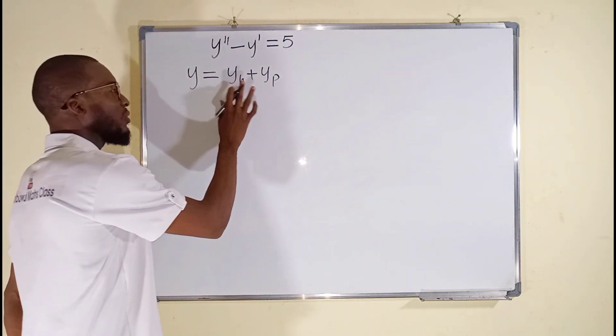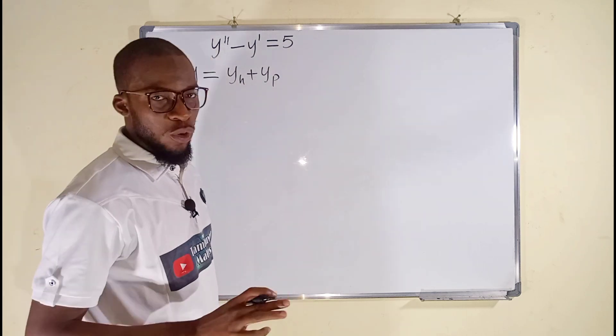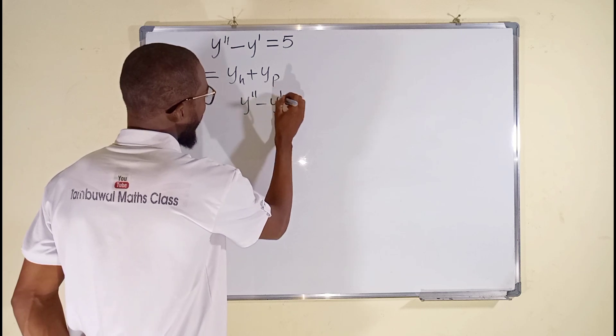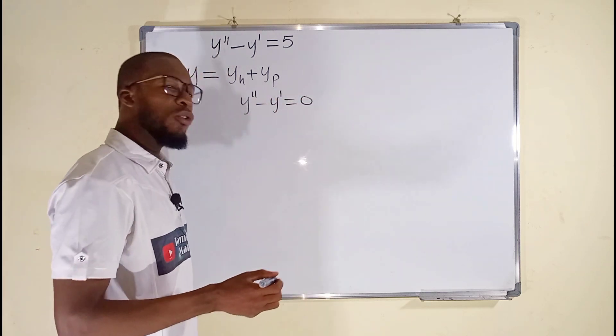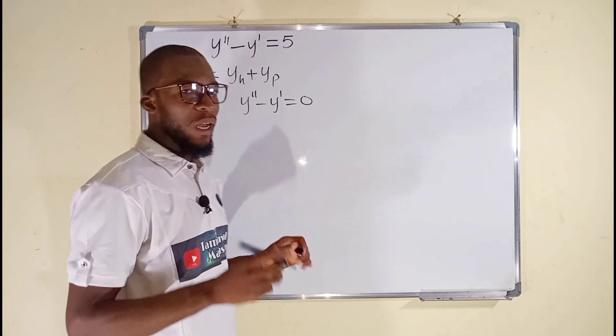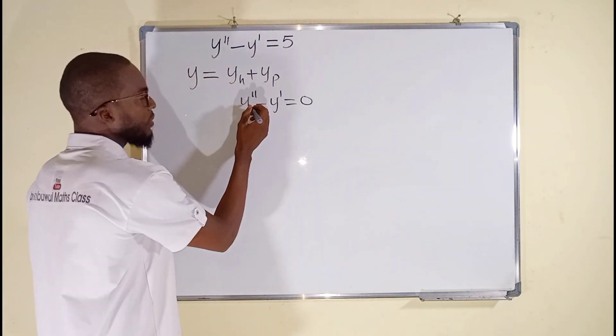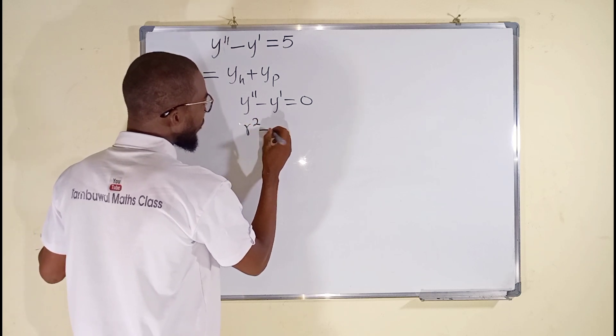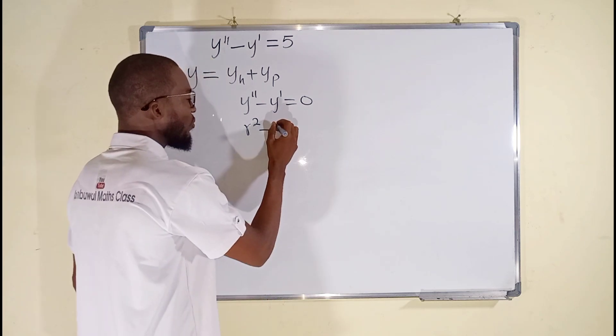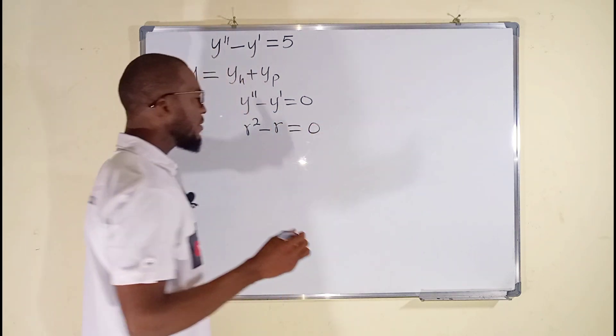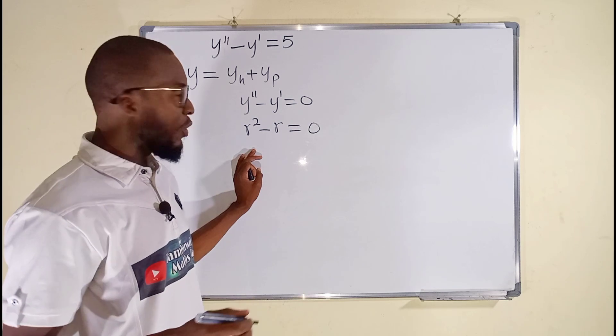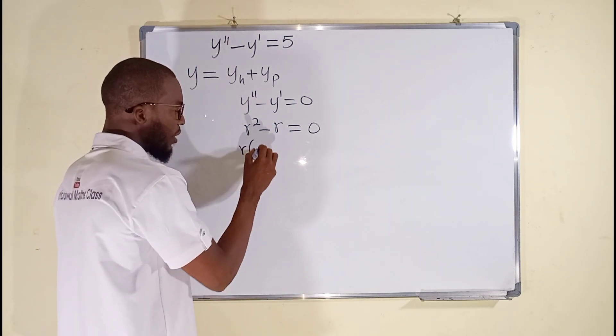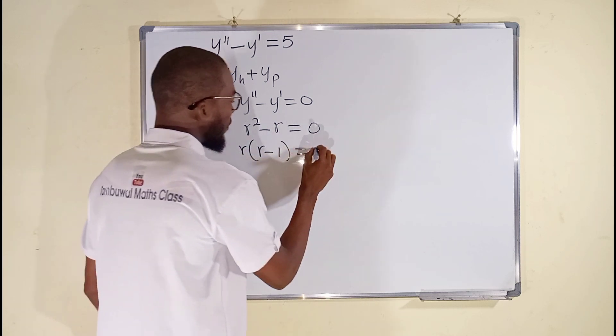Now let us find y sub h first by setting 5 to be equal to 0. We have y double prime minus y prime to be equal to 0. Then we are going to transform this equation into an auxiliary equation. By setting y double prime to be r squared, then we subtract, we set y prime to be equal to r and this is equal to 0. You can see that this is a quadratic equation. Now, let us solve this by factorization. We have r in common. We have r inside minus 1 and this is equal to 0.